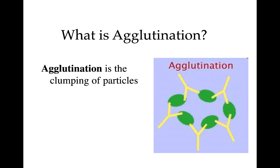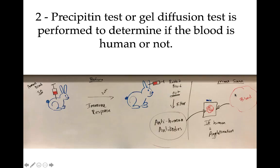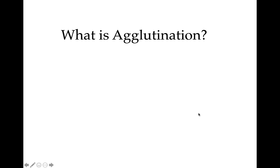Agglutination is the clumping of particles. The antibodies made by the rabbit's immune system attach to the red blood cells and they clump together. If we get agglutination, we know that blood is human blood. If we don't get agglutination, it means those blood cells aren't human because they don't have the specific receptors the rabbit's antibodies target. So as far as the forensic scientist is concerned: take a little sample, add anti-human antibodies, mix, and see if it clumps. Clumps — human; doesn't clump — not human.